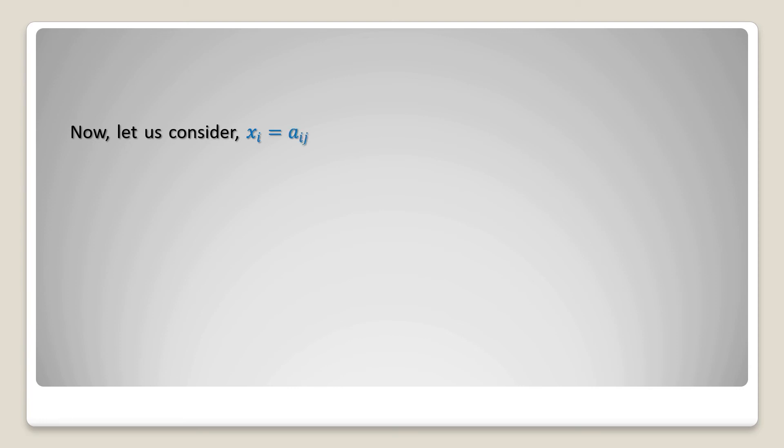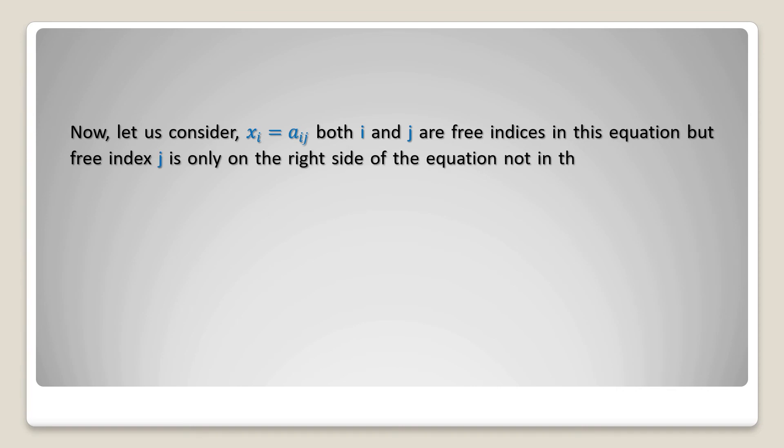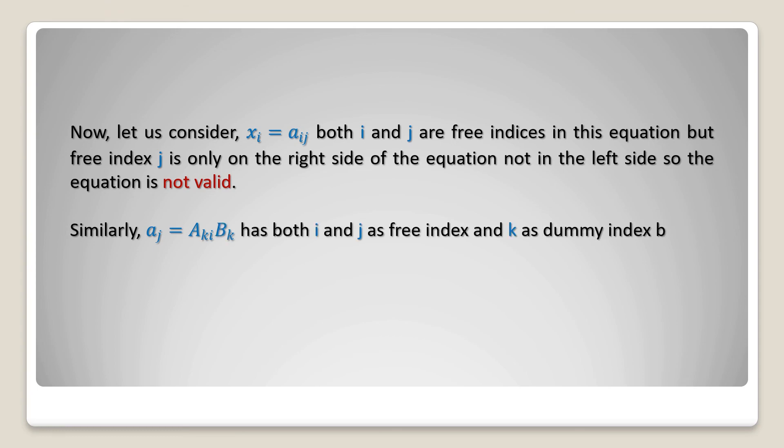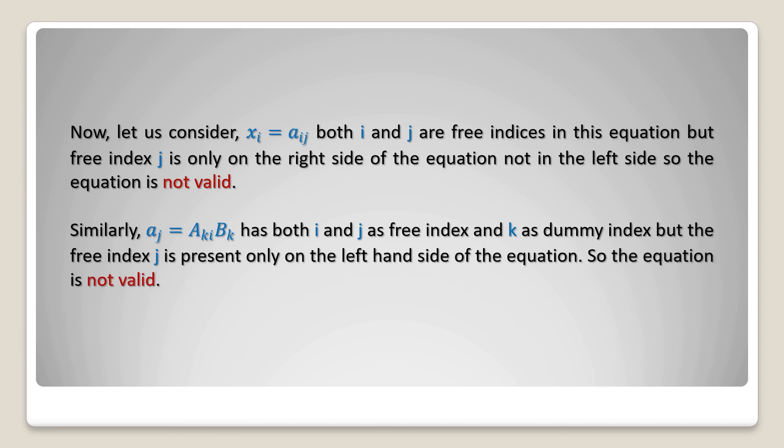Now let us consider xi equals aij. Both i and j are free indices in this equation, but free index j is only on the right side of the equation, so the equation is not valid. Similarly, aj equals aki bk has both i and j as free indices and k as a dummy index. But the free index j is present only on the left side of the equation, so the equation is not valid.